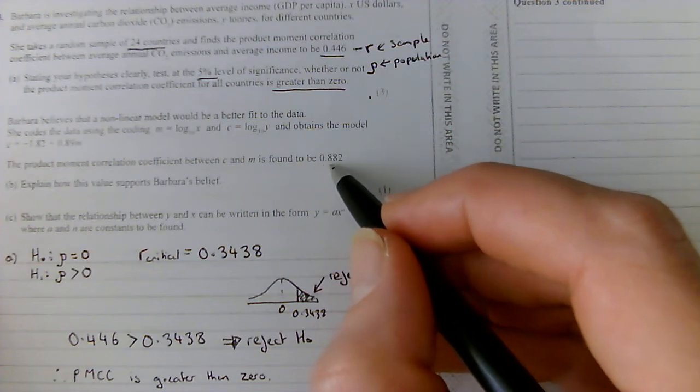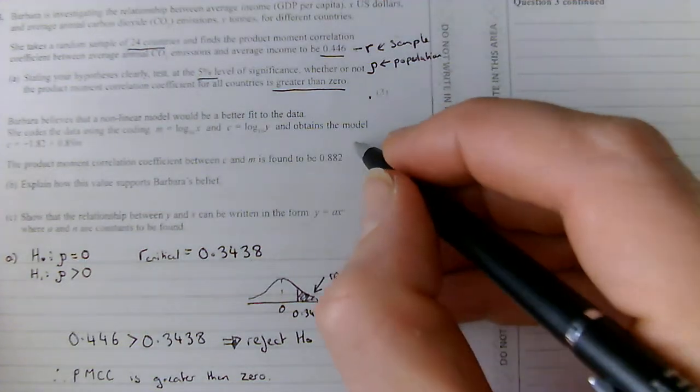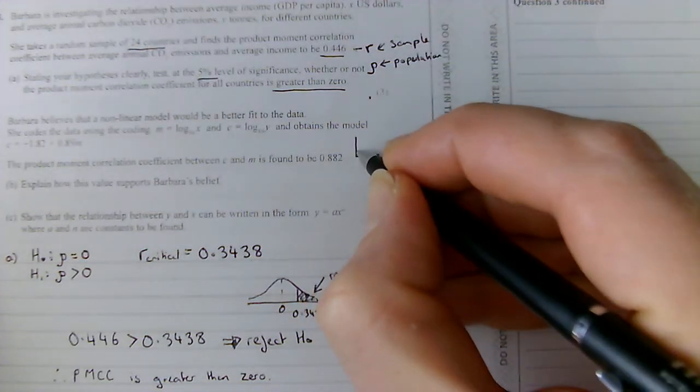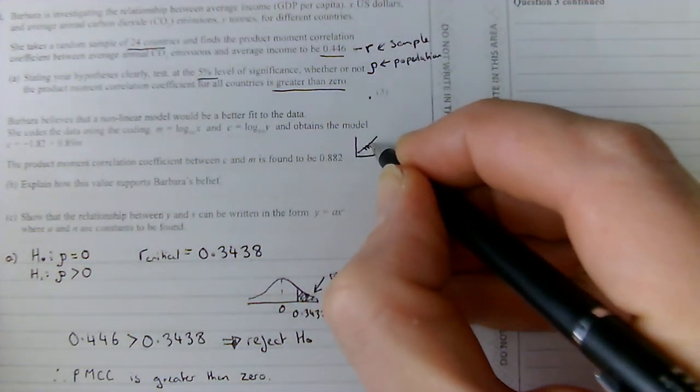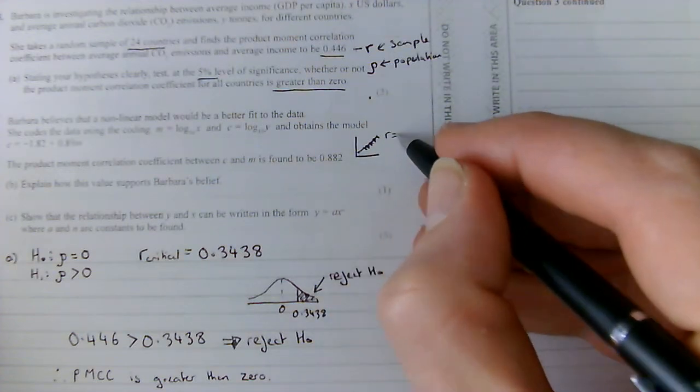the closer R is to 1, the closer the level of correlation. Just to remind you, if you've got a perfect linear correlation, you would end up with R equals 1. So the closer R is to 1, the better the correlation.